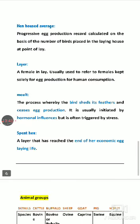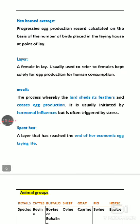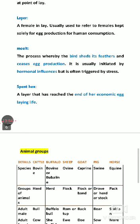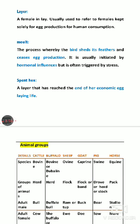Layer: the female hen reared for egg production is called a layer, while the hen reared for meat purpose is called a broiler. Moult is a phase in the life cycle of the bird.